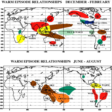ENSO conditions have occurred at two to seven-year intervals for at least the past 300 years, but most of them have been weak. Evidence is also strong for El Niño events during the early Holocene epoch 10,000 years ago. El Niño may have led to the demise of the Moche and other pre-Columbian Peruvian cultures. A recent study suggests a strong El Niño effect between 1789 and 1793 caused poor crop yields in Europe, which in turn helped touch off the French Revolution.